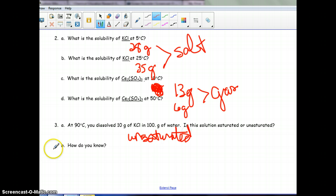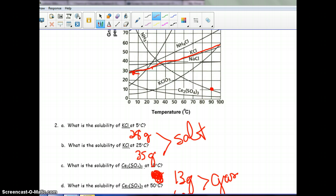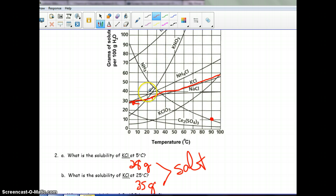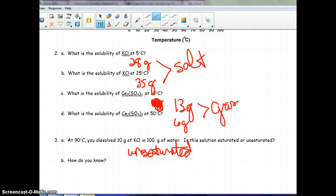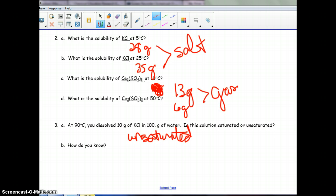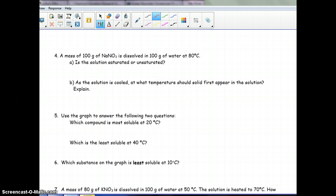How do you know? Well, first off, you know because it's below the line. Second off, you know because there is less dissolved than what could be dissolved. Less than the maximum. The maximum would be a little above 50, and there's only 10 grams. So that's way, way, way below the maximum.